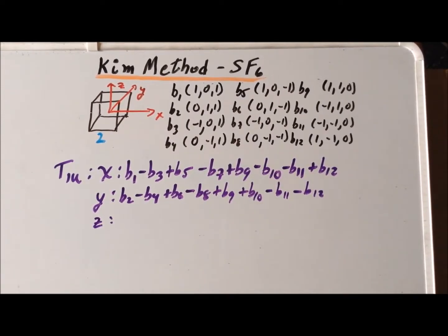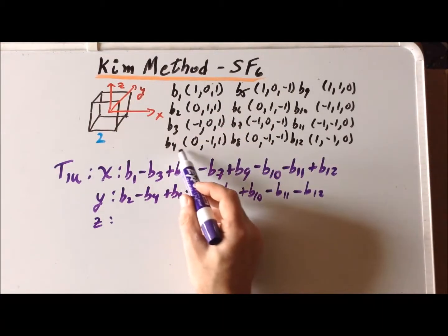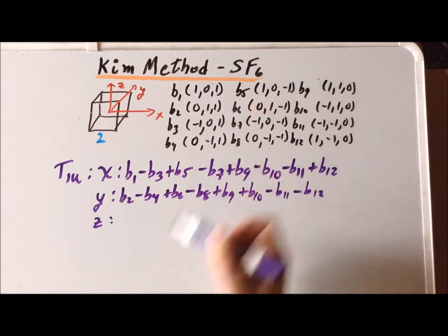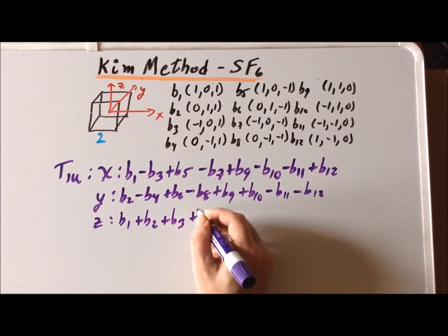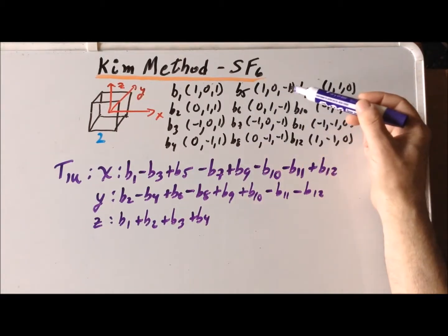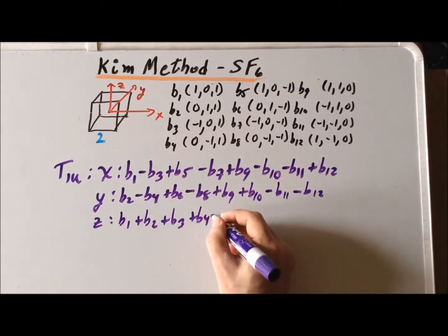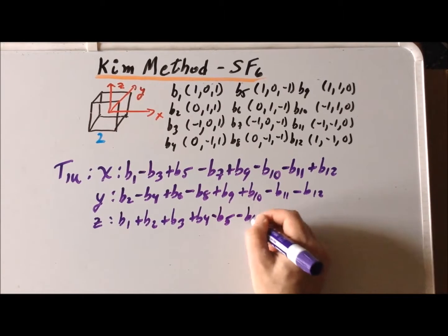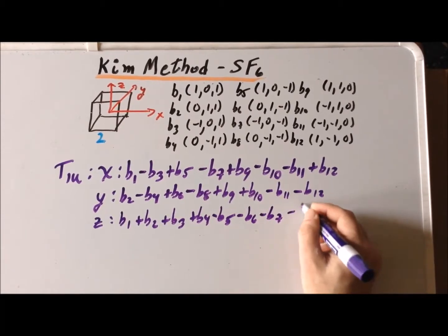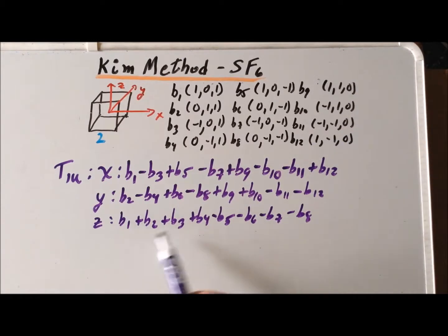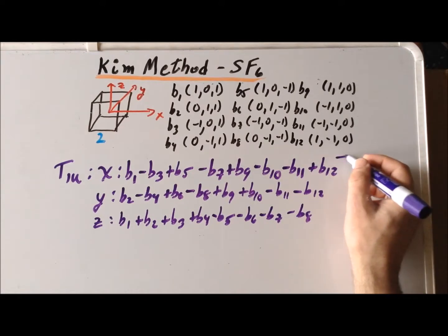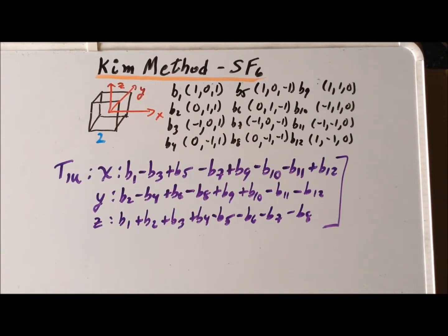The last basis function for T1u is z. For B1 through B4, the z coordinates are +1, so we have B1 + B2 + B3 + B4. For B5 through B8, the z coordinate is −1, so the coefficients are negative: −B5 − B6 − B7 − B8. For B9 through B12, the z coordinates are 0, so the coefficients are also 0. This gives us all three members of the T1u irreducible representation for the bending motions of sulfur hexafluoride.